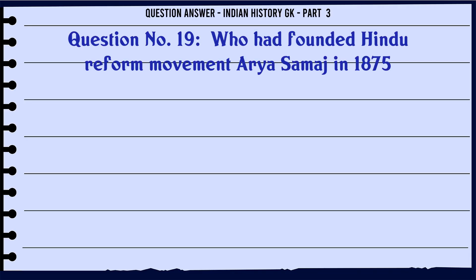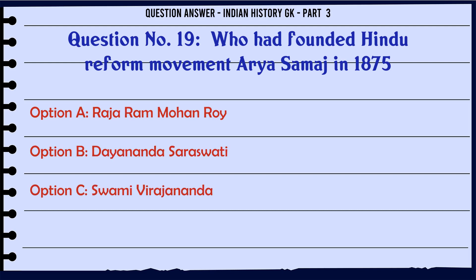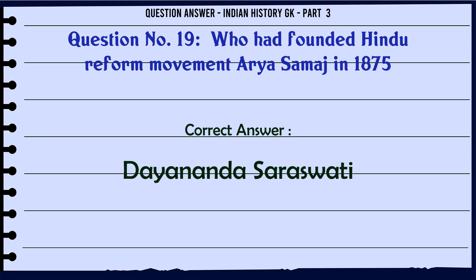Who had founded the Hindu reform movement Arya Samaj in 1875? A. Raja Ram Mohan Roy, B. Dayananda Saraswati, C. Swami Vivekananda, D. Debendranath Tagore. The correct answer is Dayananda Saraswati.